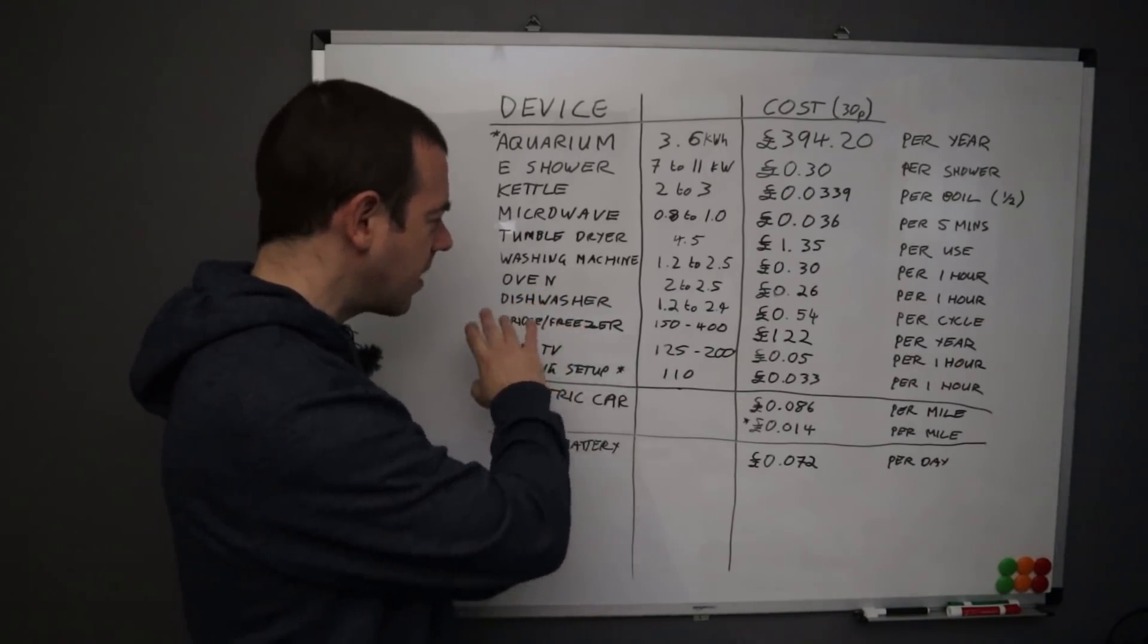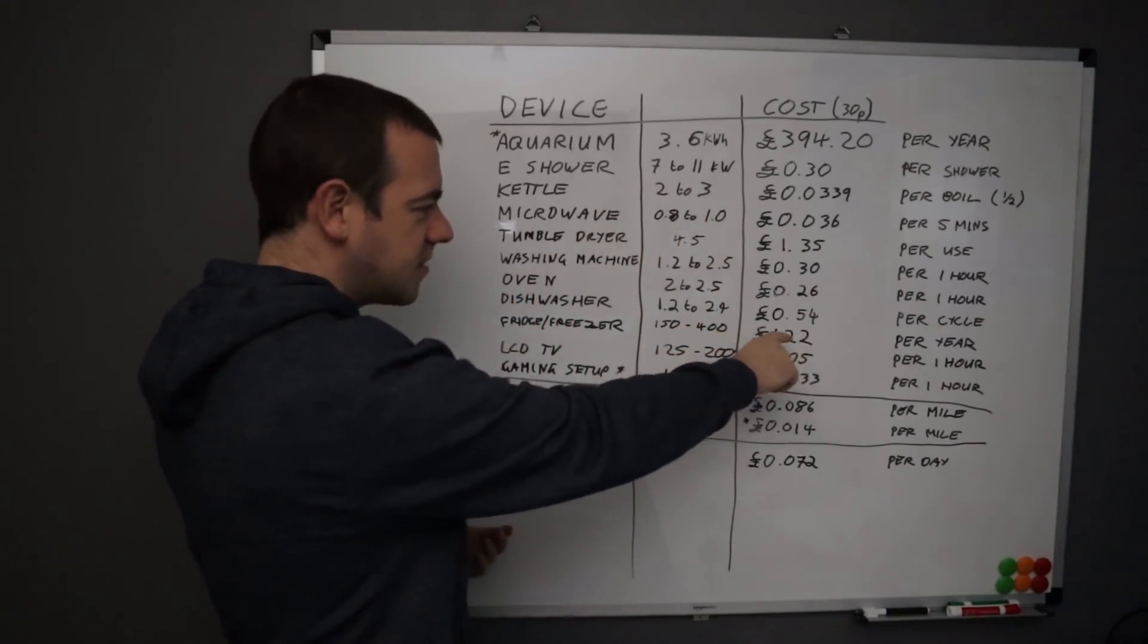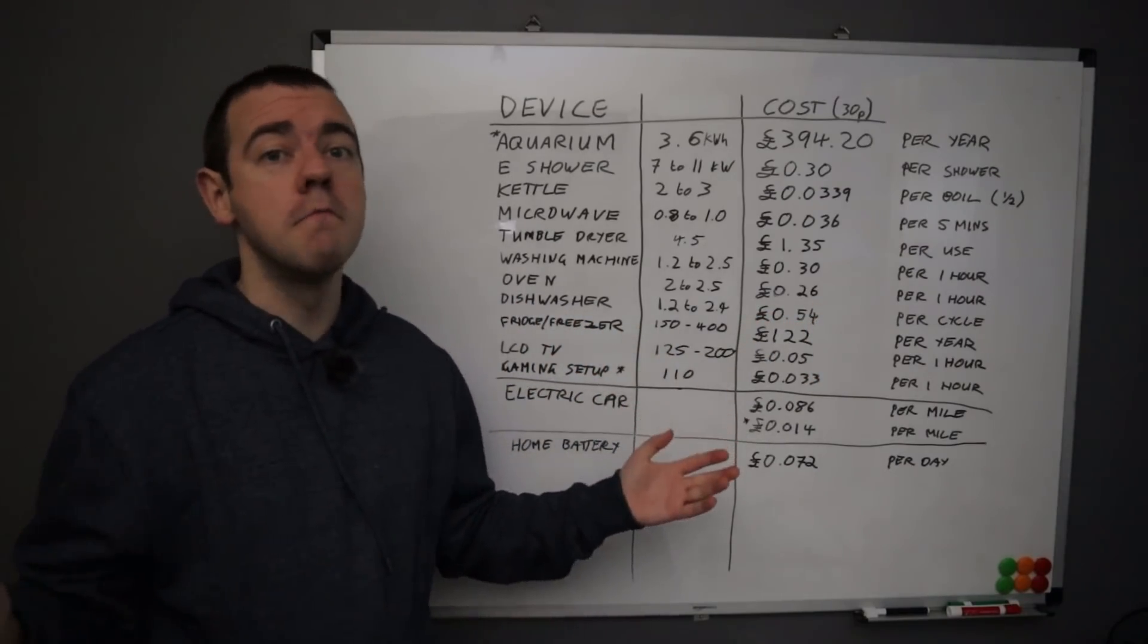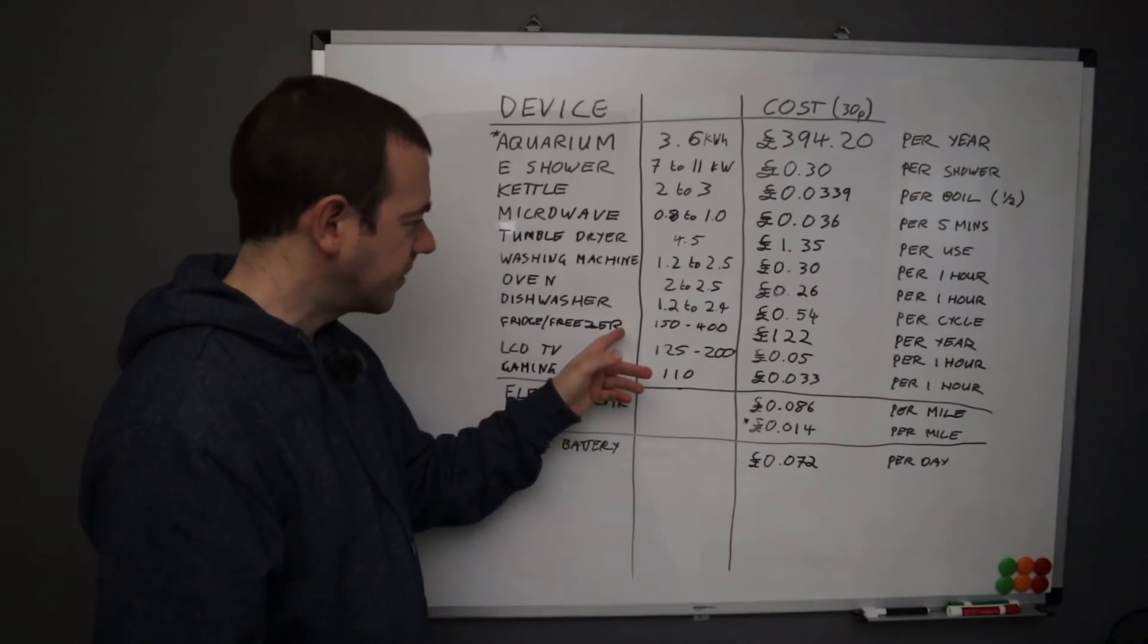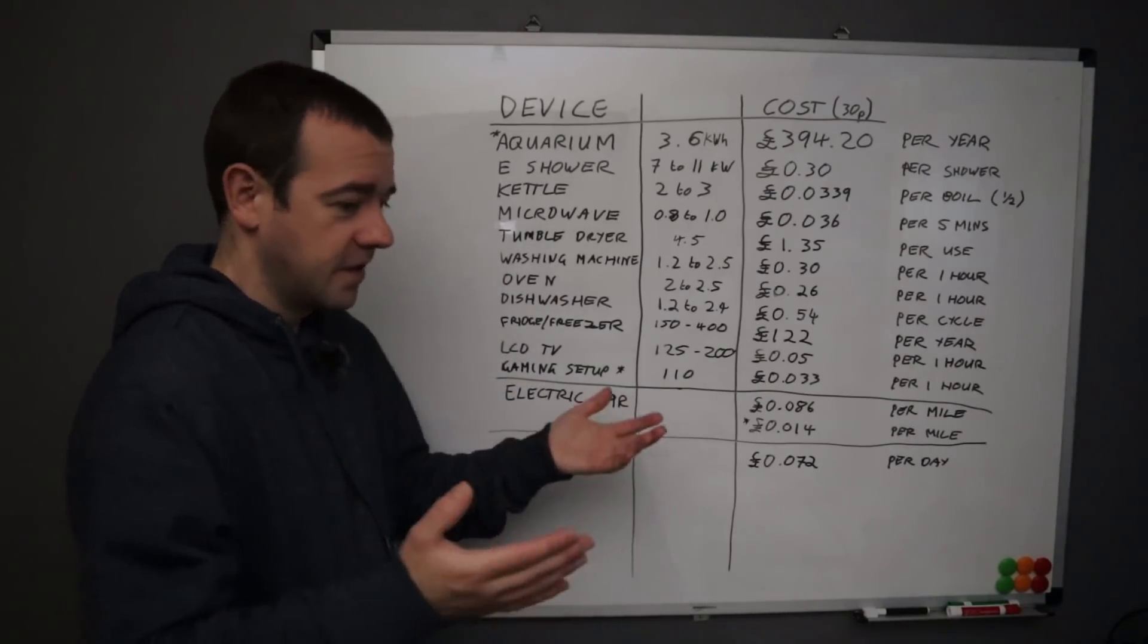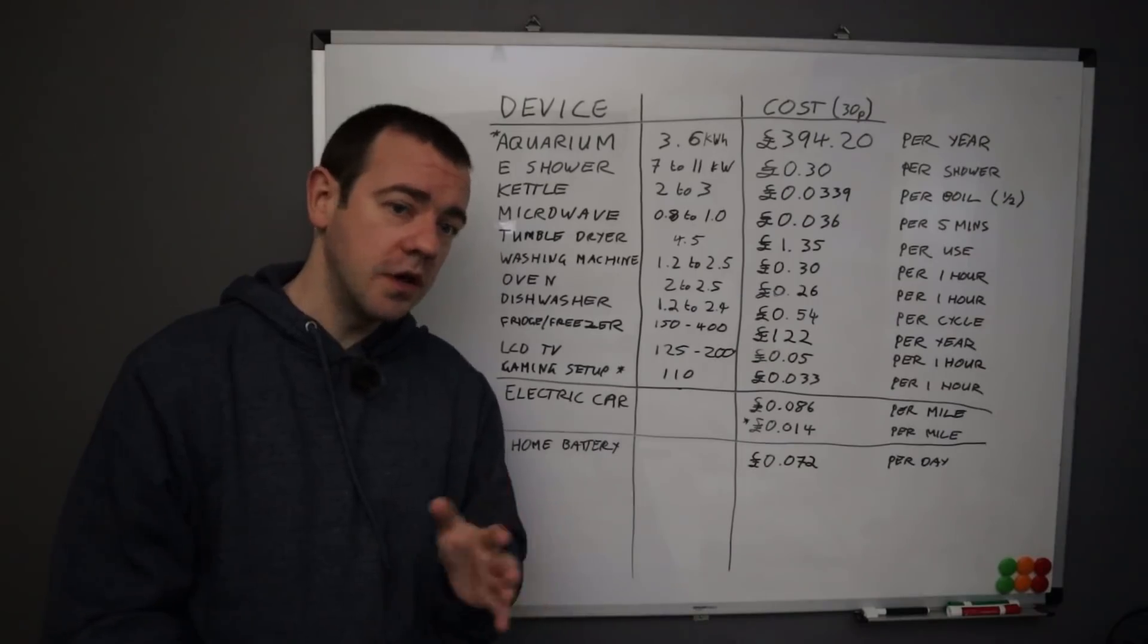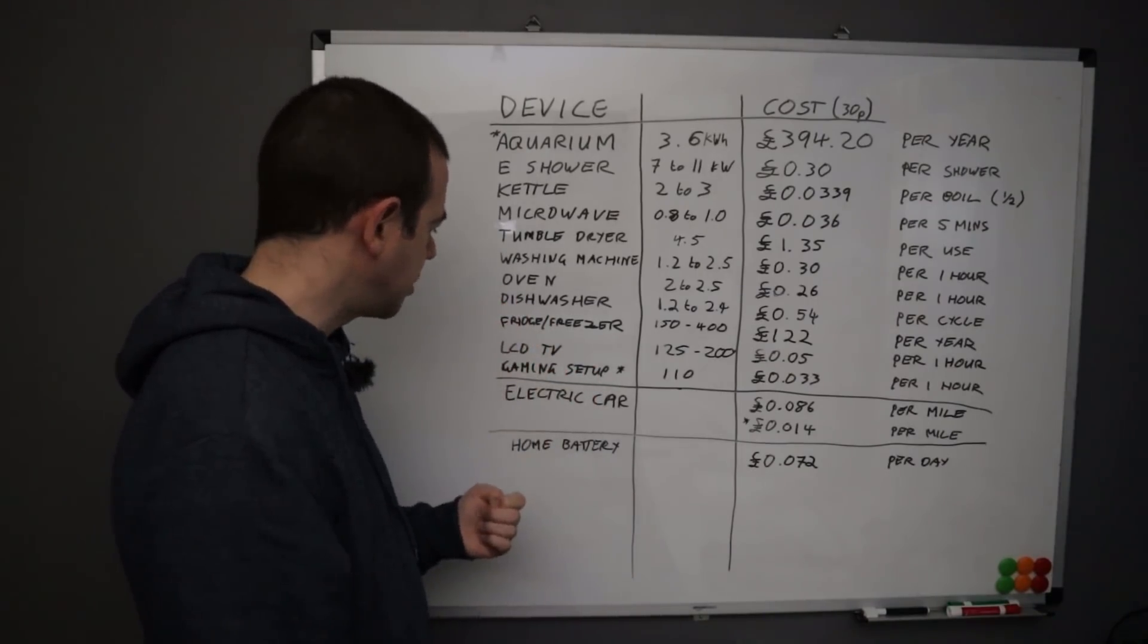Fridge-freezer. Again most of these are based on the averages that I've found online. £122 per year to run your typical fridge-freezer. Obviously there are many, many variations, this is averages and averages. So again you can't really do anything with that. A fridge-freezer has to be on all the time. You can get a more efficient one of course, you can get a smaller one if you don't need the space, but other than that it is what it is. Not much you can change.